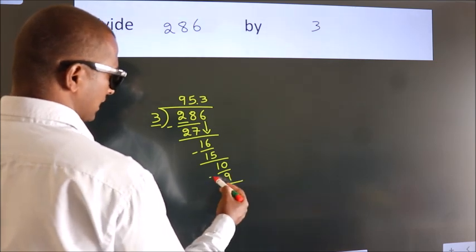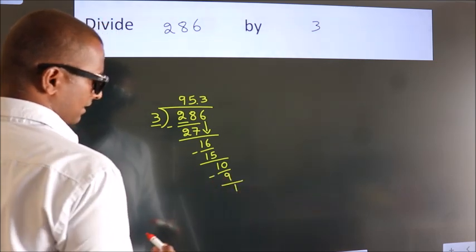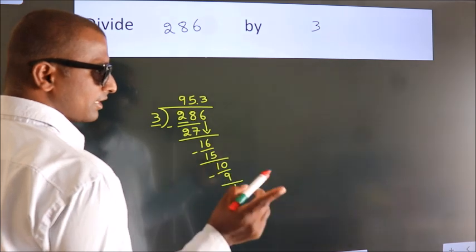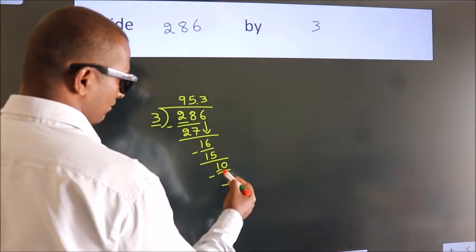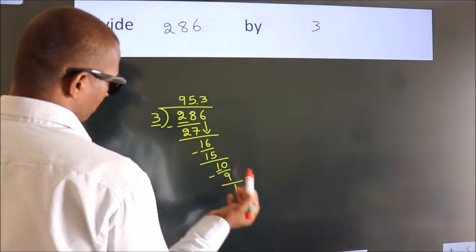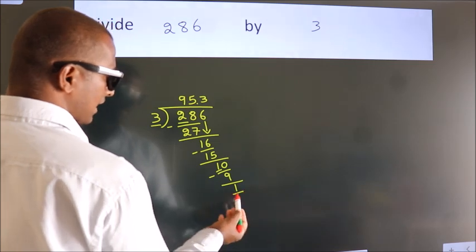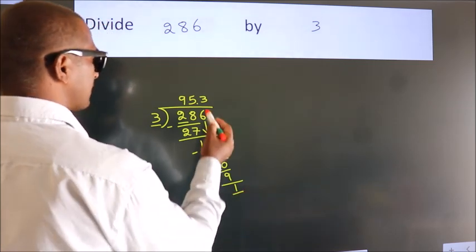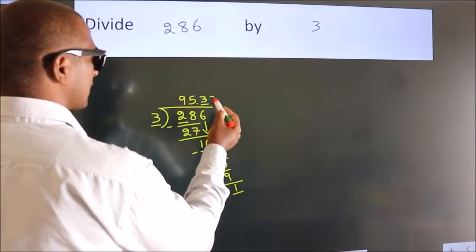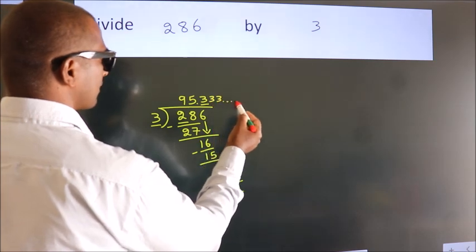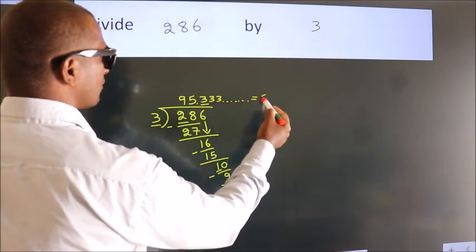Now we subtract. We get 1. Now you observe. We had 1 here. And we got 1 again. That means this number keeps on repeating. So this is our quotient.